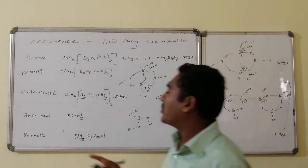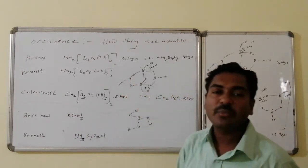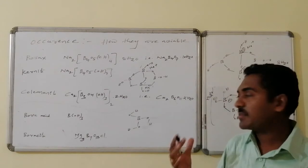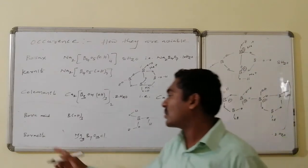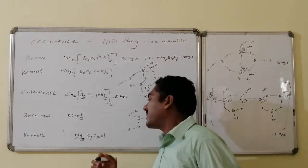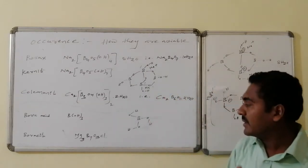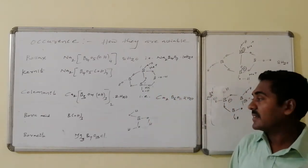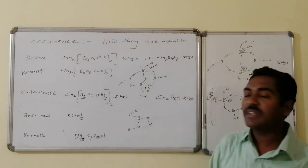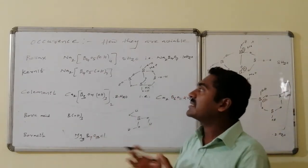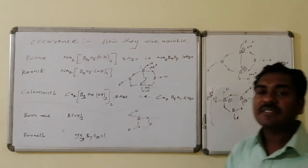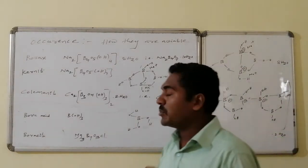Another important naturally available form of Boron is Boric acid, B(OH)₃, whose structure will be explained in detail later. Boracite, a magnesium borate with formula Mg₃B₇O₁₃Cl, is also one of the naturally available forms. Thus, Boron is present in the forms of Borax, Kernite, Colemanite, Boric acid, and Boracite.